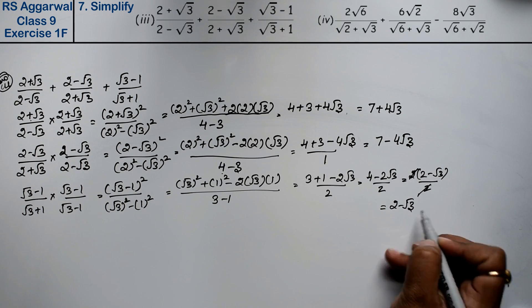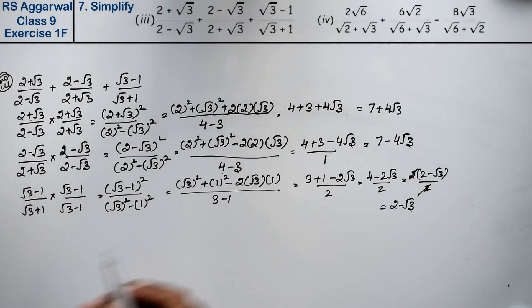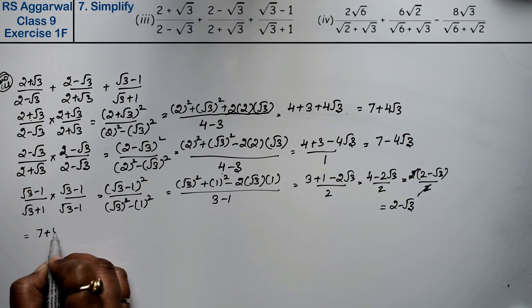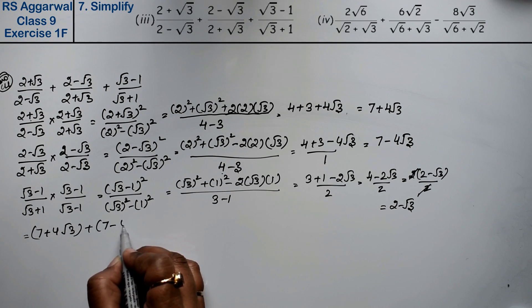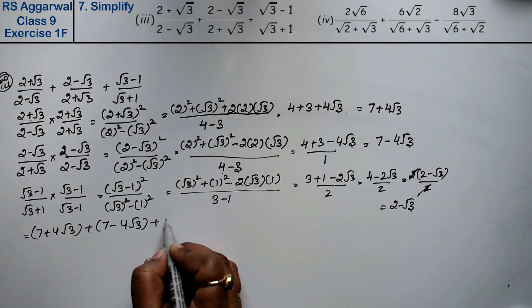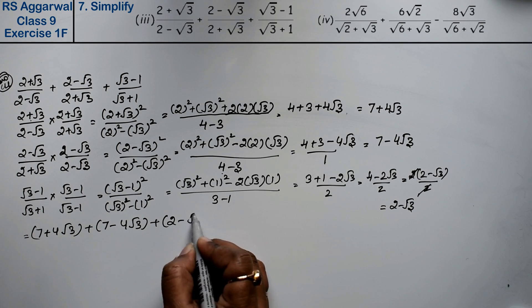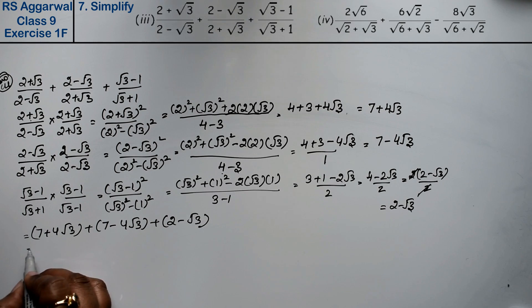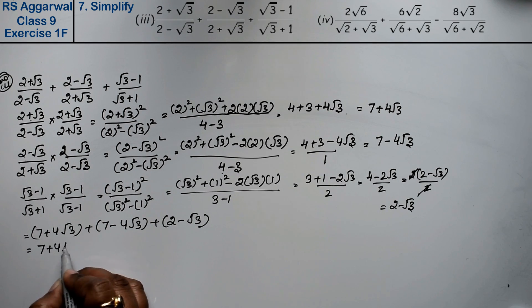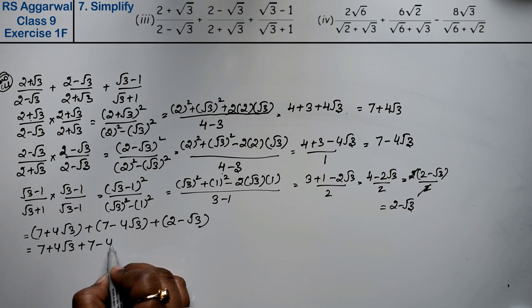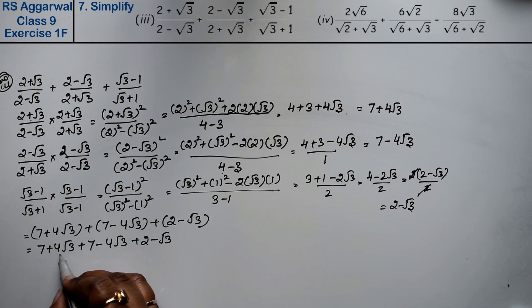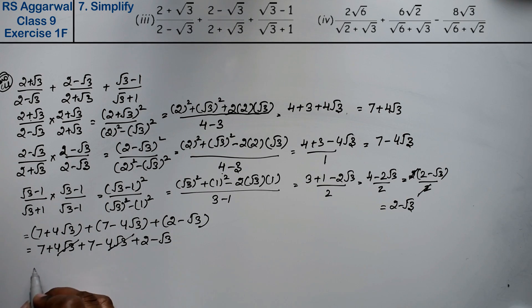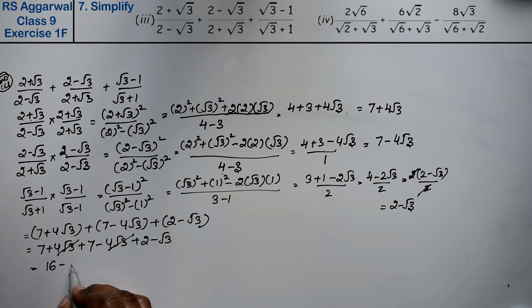Now adding all three results: (7 + 4√3) + (7 - 4√3) + (2 - √3). The +4√3 and -4√3 cancel. We get 7 + 7 + 2 - √3 = 16 - √3 as the answer.